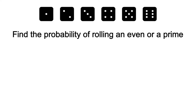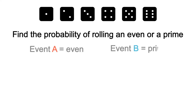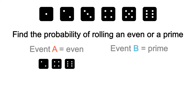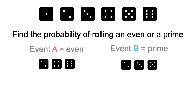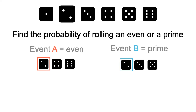Now let's say we wanted to find the probability of rolling an even number or a prime number. Let event A equal any die that's even, and event B equal any die that's prime. Event A contains three items: dice 2, 4, and 6. Event B also contains three items: dice 2, 3, and 5. Notice that events A and B both contain die 2, so if we were to roll a 2, events A and B can occur at the same time because they share a common outcome.